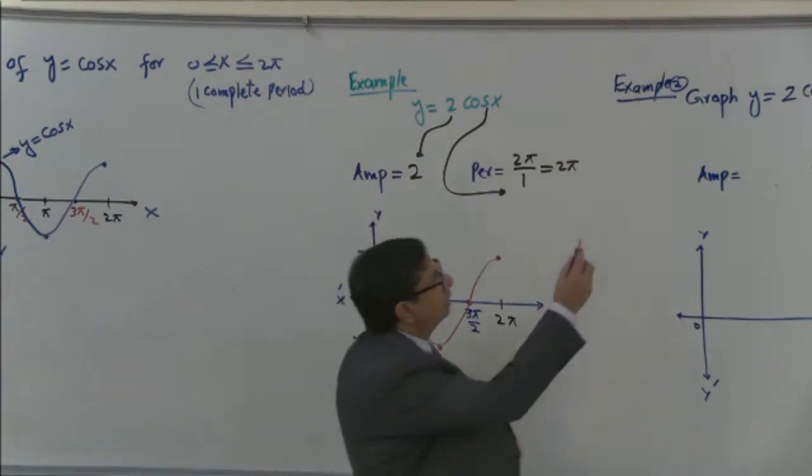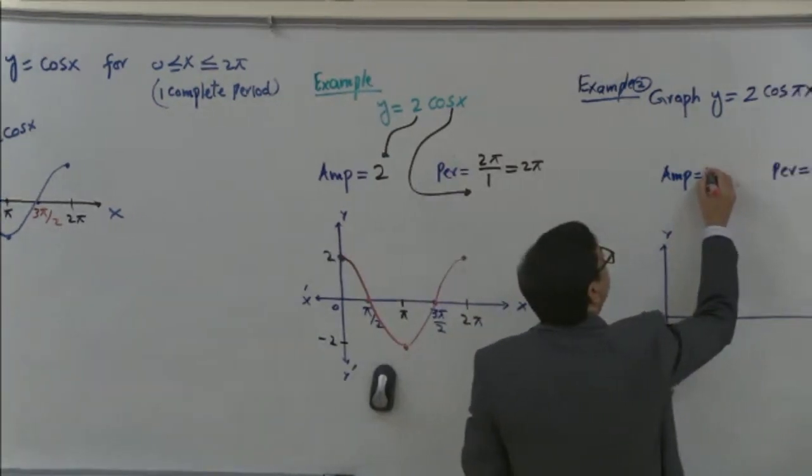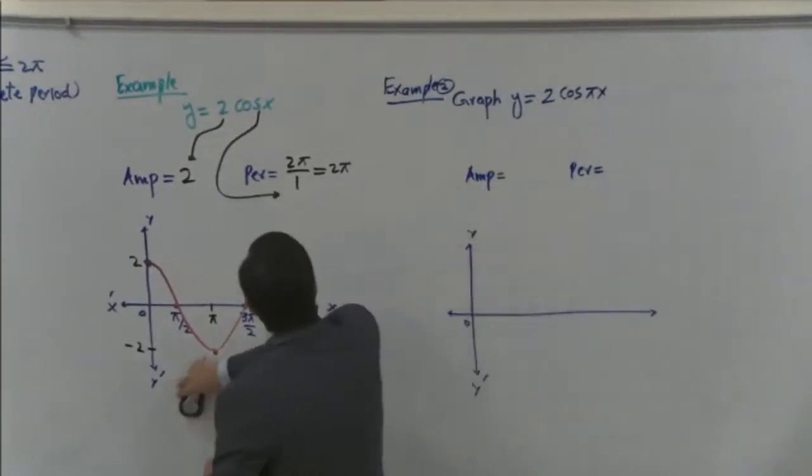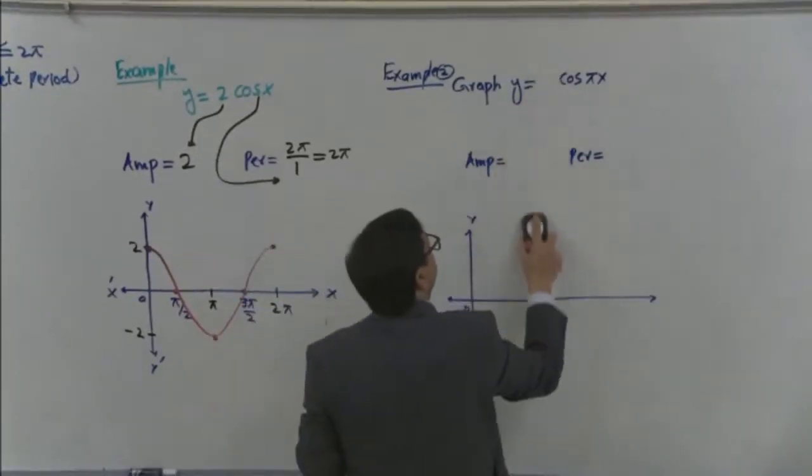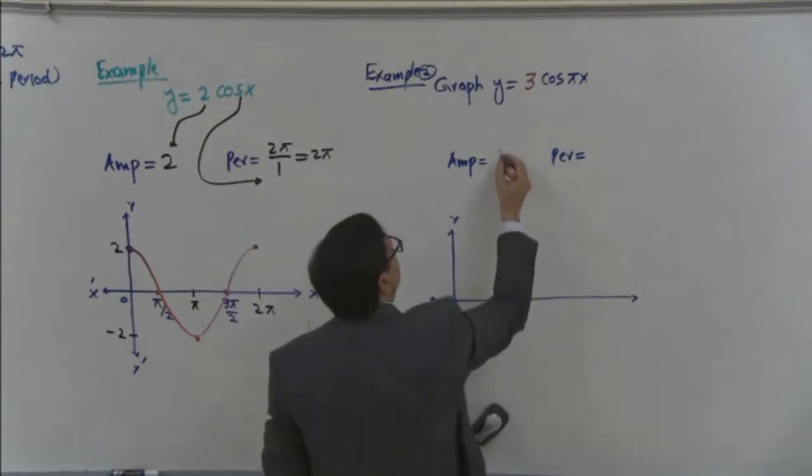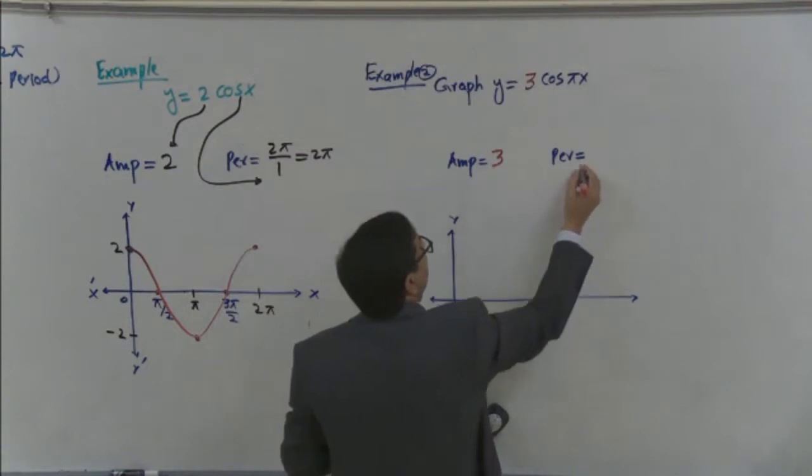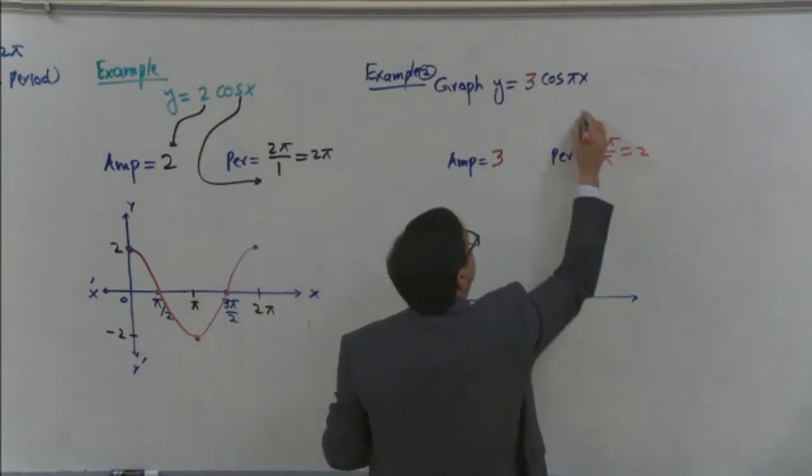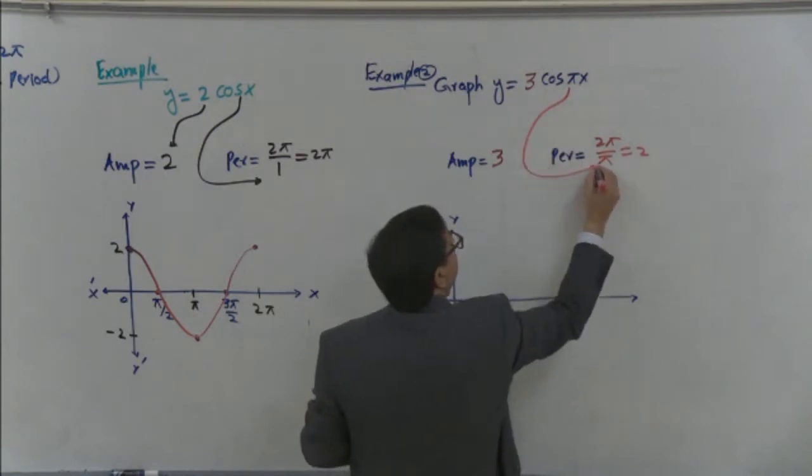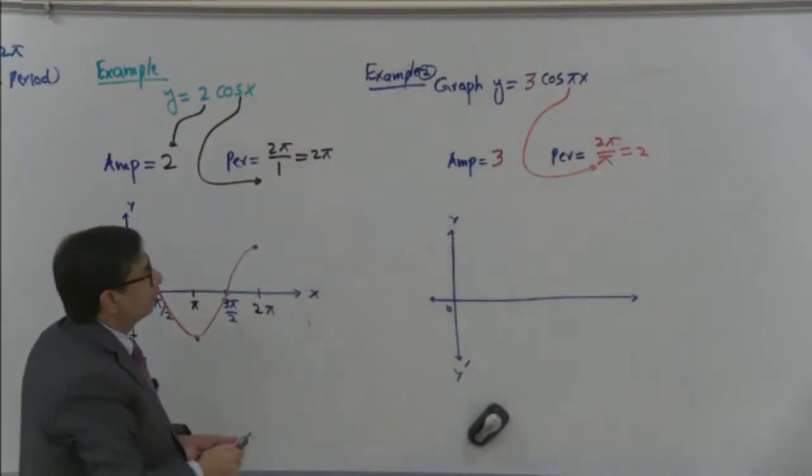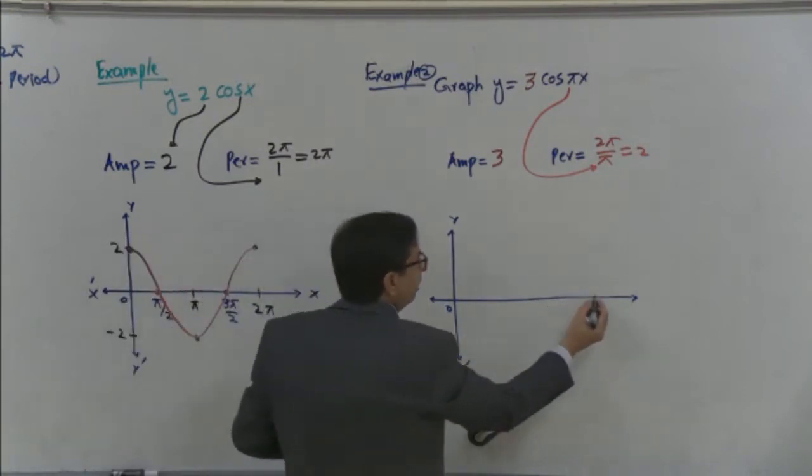Same way, we can graph this one. Amplitude is 2. Let's change this amplitude to 3. Because already we use 2. I make it 3. And this is 3. And period is 2π over π, which is 3. By this number we are dividing. So this gives the period.